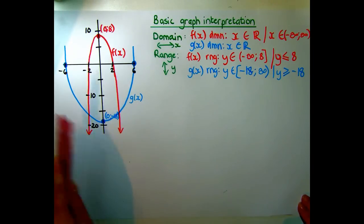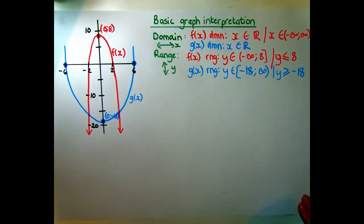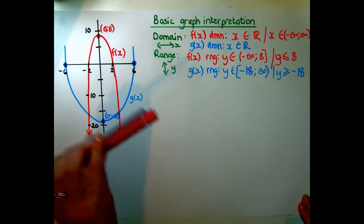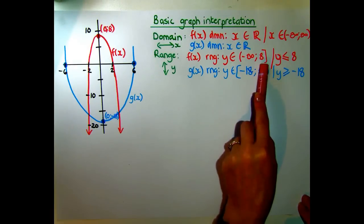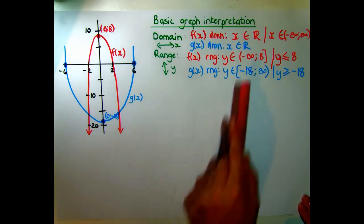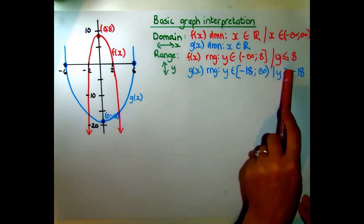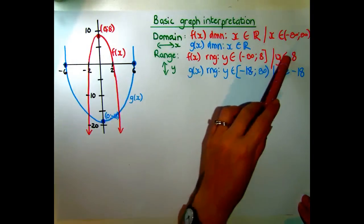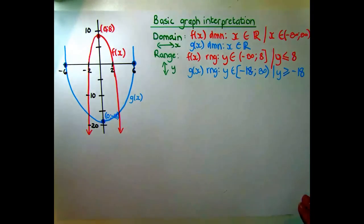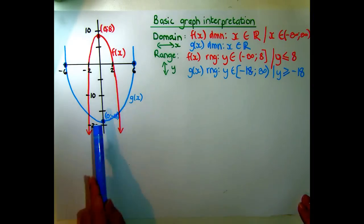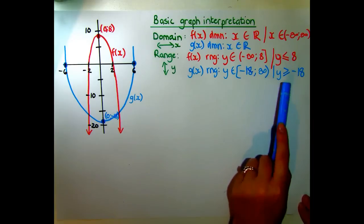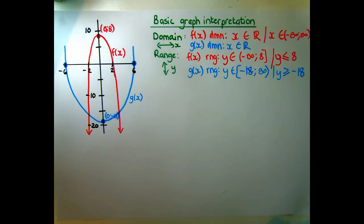Range is how far up and down the graph goes. The red graph can go infinitely down but caps out at the top at 8, which is its maximum. So the range is y ∈ (-∞, 8]. Since 8 is included, it gets a square bracket. In set builder notation: y ≤ 8. The blue graph has range y ∈ [-18, +∞), or y ≥ -18, since -18 is its minimum.